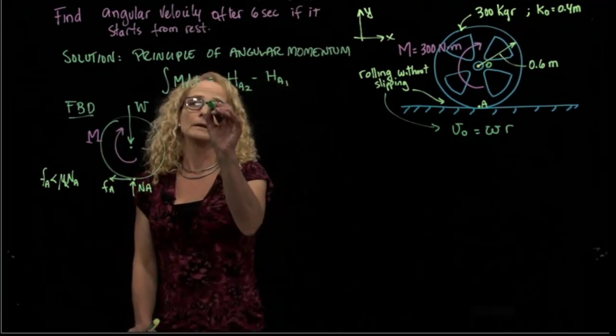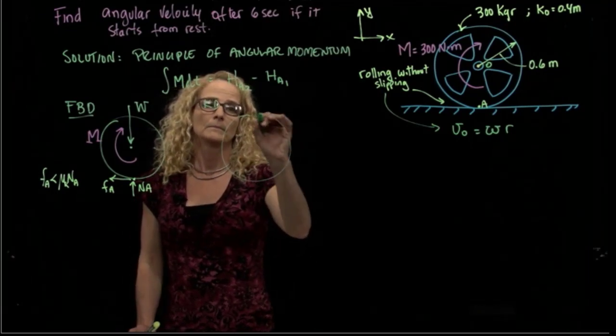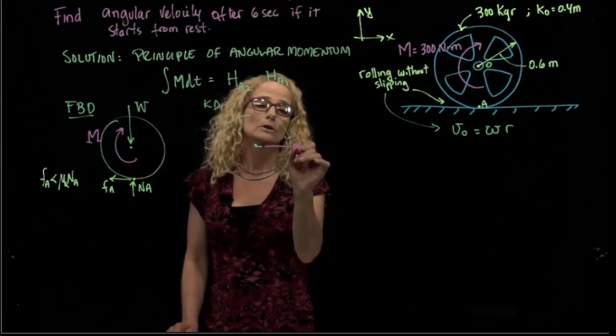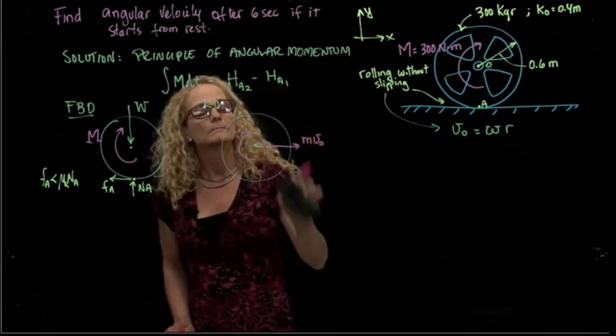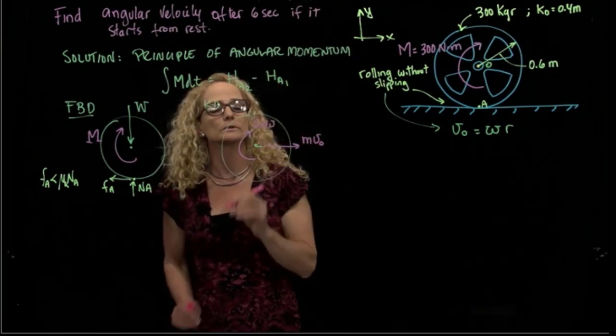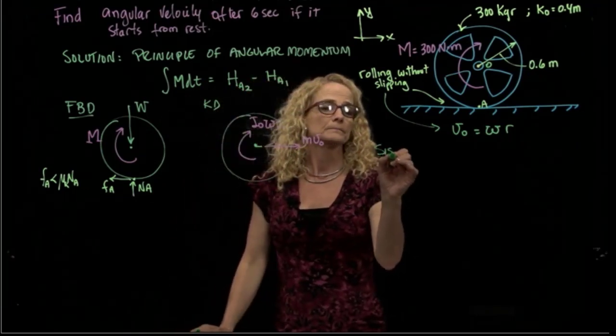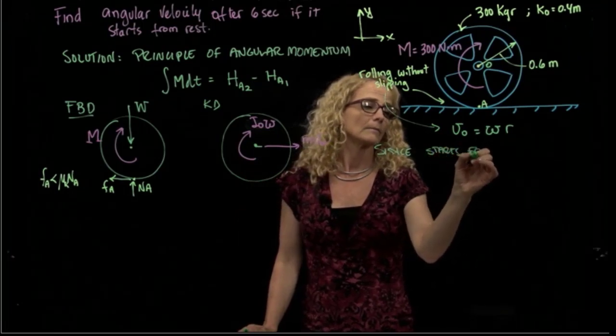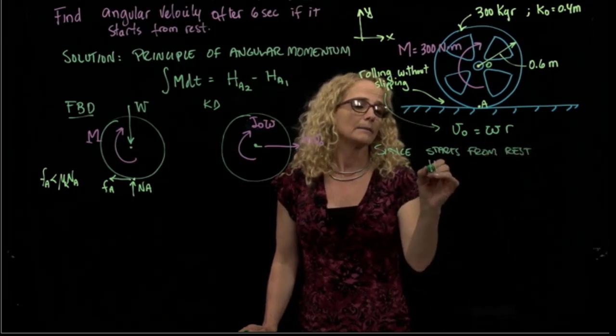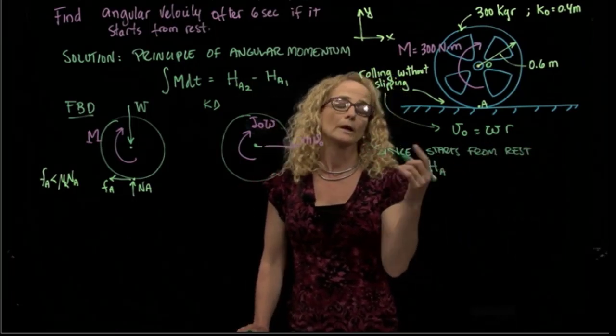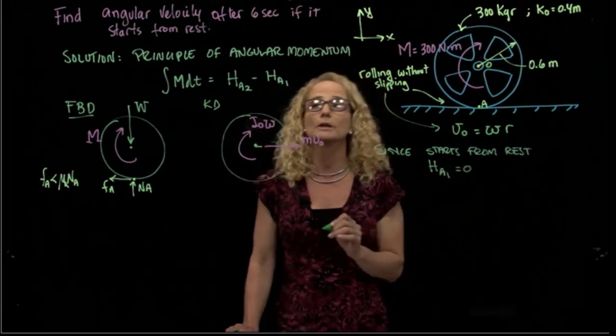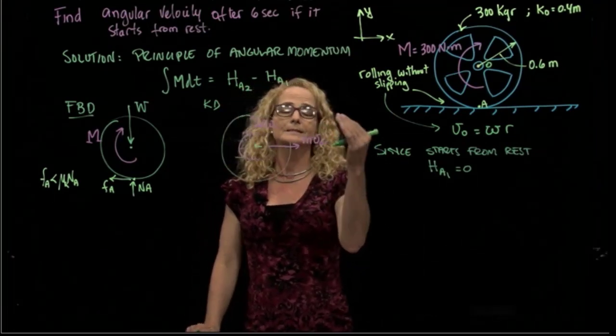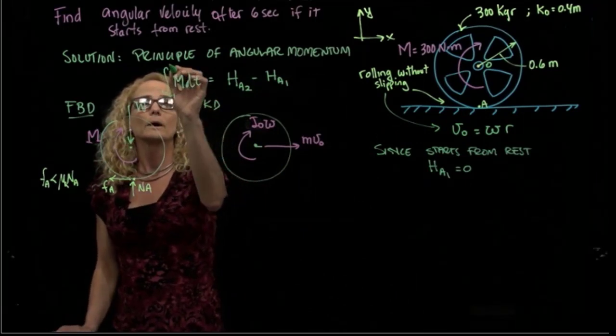If I actually want to write the kinetic diagram, the kinetic diagram for velocity (because I'm relating velocity, not acceleration), it will be mass times the velocity of O and mass moment of inertia times angular velocity. Since the system will start from rest, I can say that the angular momentum with respect to point A or any point in position A is equal to zero. So we have to calculate only the angular momentum in the second position after six seconds have passed.